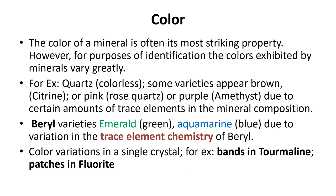Color is often said to be the most striking property; however, for identification purposes, the color exhibited by a mineral can vary greatly. For example, quartz is colorless, but the brown variety is known as citrine, the pink variety as rose quartz, and if quartz exists in purple color it is known as amethyst. These colors are due to certain amounts of trace elements in the mineral composition.